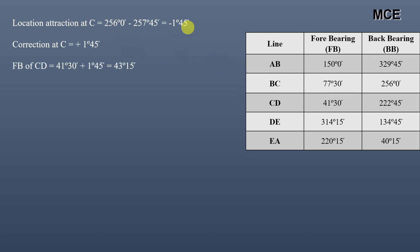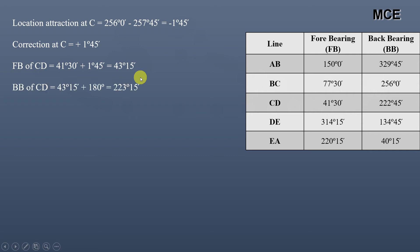The correct fore bearing of line CD is the observed fore bearing plus the correction. Applying the correction of plus 1°45' gives the correct fore bearing of line CD as 43°15'. The correct back bearing of line CD will be the correct fore bearing plus 180 degrees, which equals 123°15'.